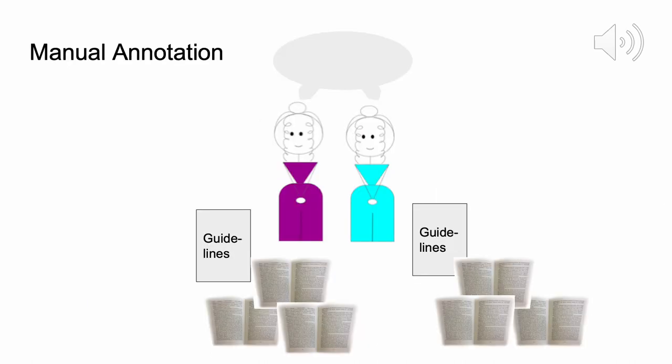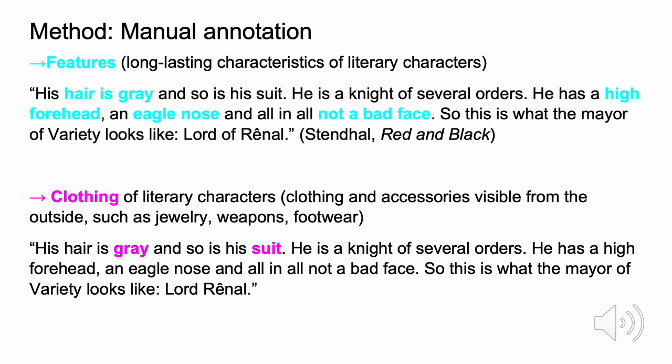We used manual annotation to find out how characters were described within our corpus, annotating different texts using guidelines to reach consistent annotations. Within discussion sessions, which were an integral and recurring part of the annotation phase, we checked on difficult cases and open questions. Basically, we annotated four different units, which we will explain by referring to one example sentence from Stendhal's novel 'Red and Black.' Firstly, we annotated features — long-lasting characteristics of literary characters. In the example sentence, the gray hair, the high forehead, the nose and the not-bad face are annotated as character features.